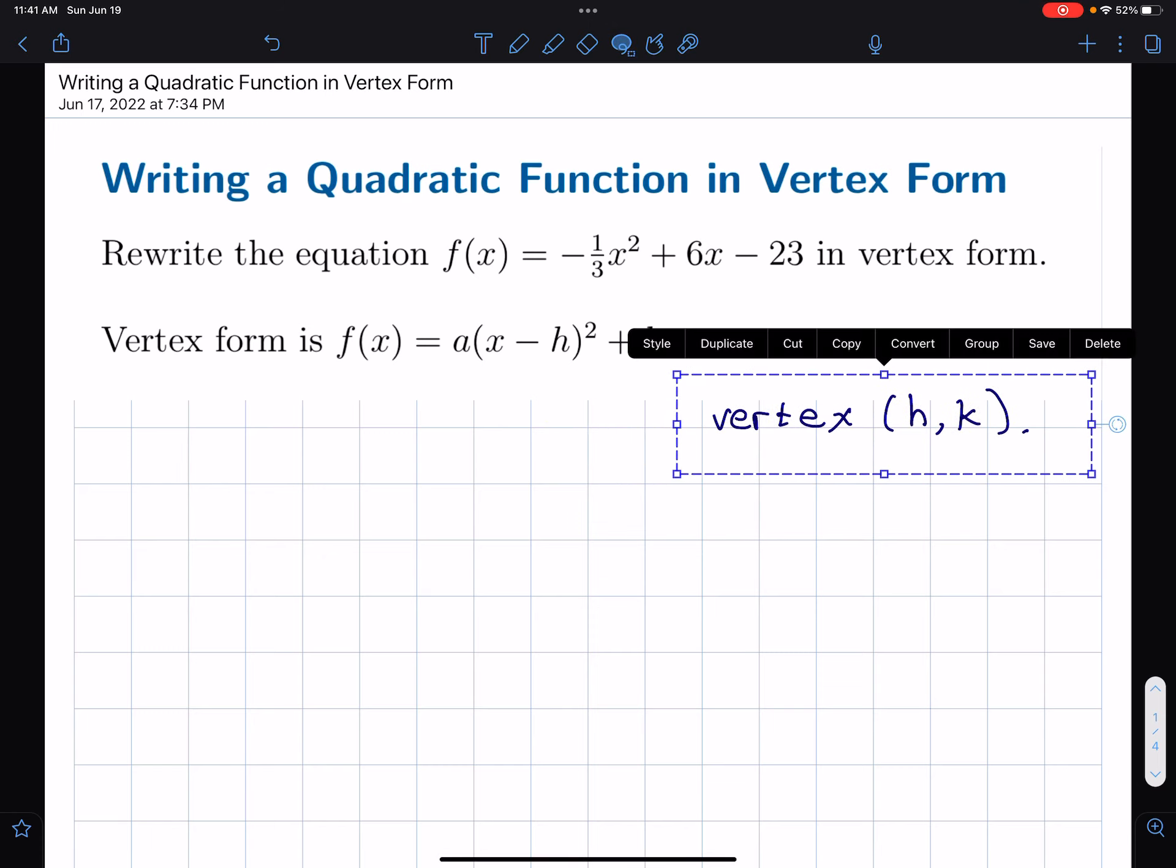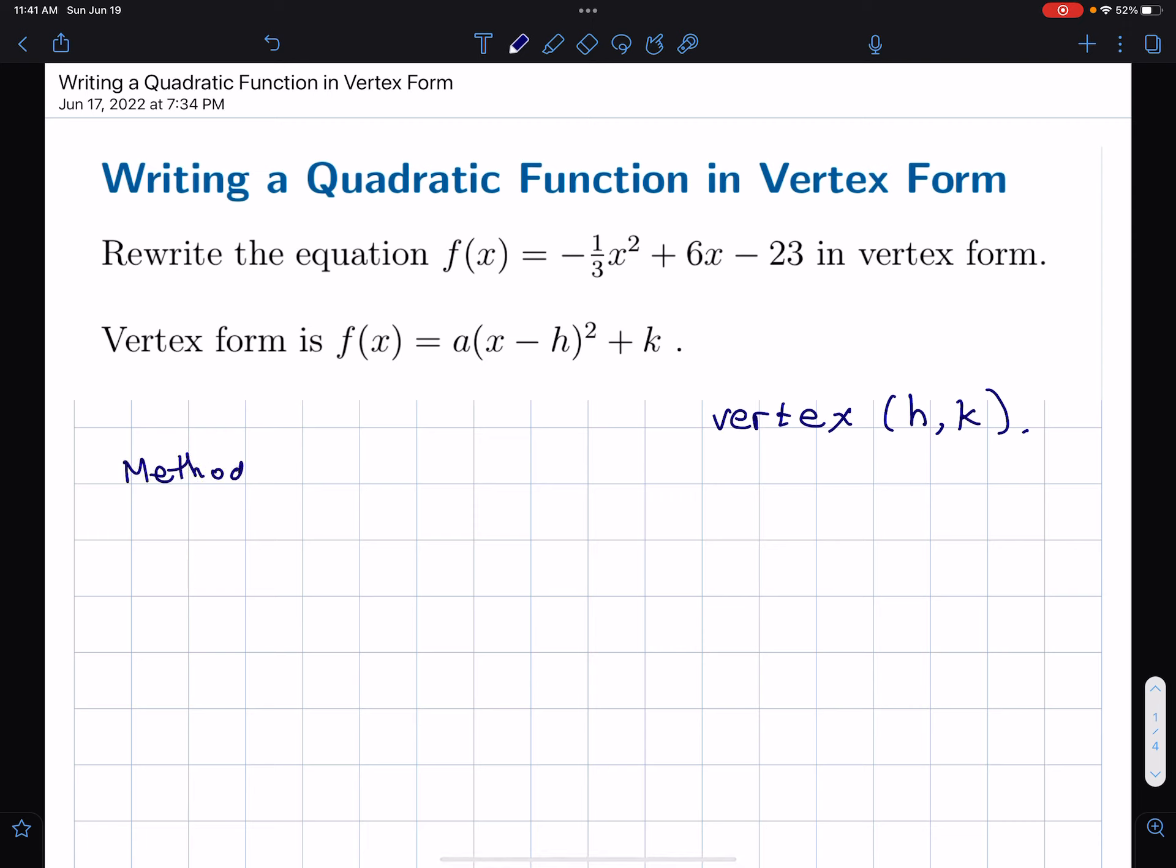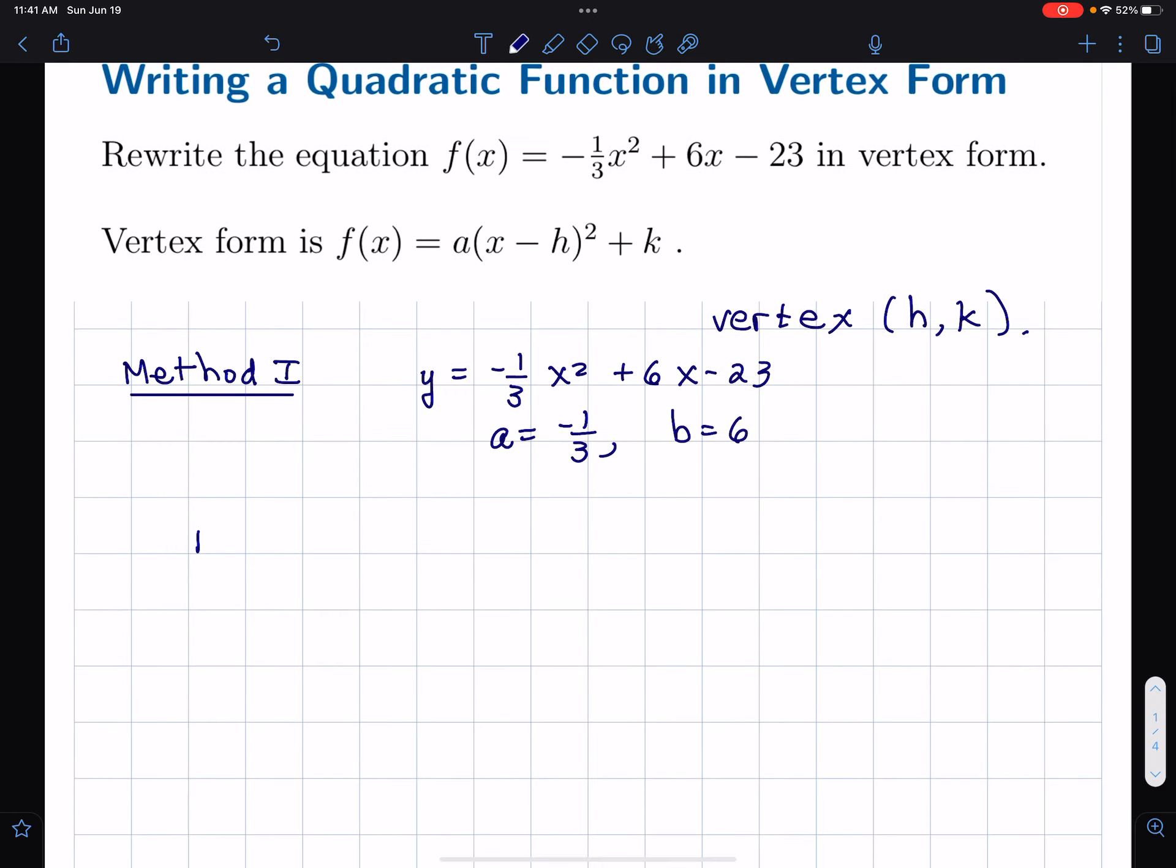So I have two different methods that I'm going to talk about. This method here is the first one. So let me talk about this one method. I mean, I think you can combine these methods. But for this guy here, I have y equals negative one-third x squared plus 6x minus 23. And the coefficient of x squared is called, will be a, the coefficient of x will be b. And what you can do is you can use a formula using a and b. And the formula tells us what h is of the vertex. And so, h is equal to negative b over 2a.